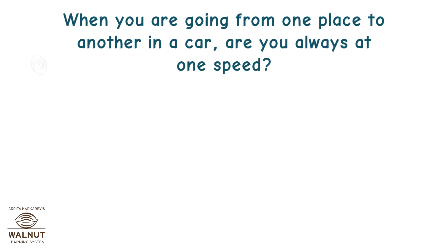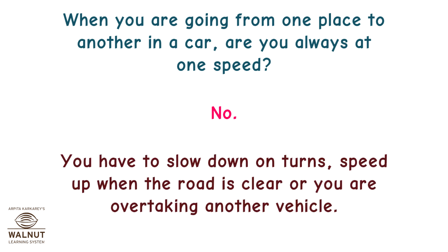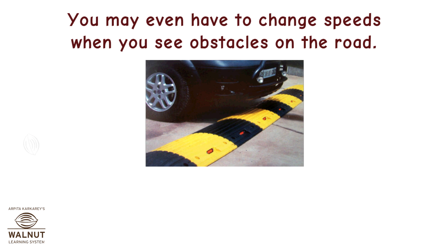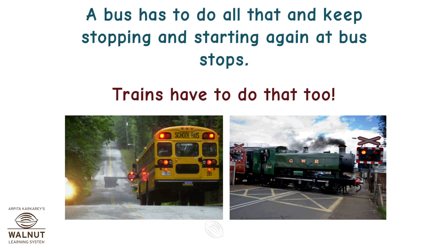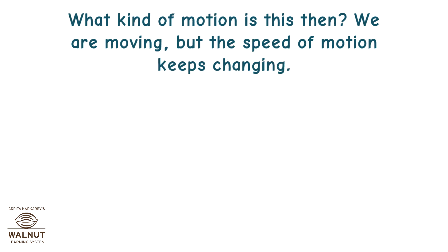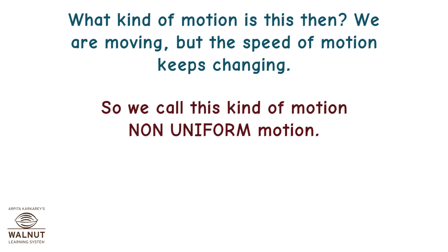When you are going from one place to another in a car, are you always at one speed? No. You have to slow down on turns, speed up when the road is clear, or when overtaking another vehicle. You may even have to change speeds when you see obstacles on the road. Most of the times when we are in a moving vehicle the speed keeps changing. A bus has to keep stopping and starting again at bus stops. Trains have to do that too. We are moving, but the speed of motion keeps changing — we call this kind of motion non-uniform motion.